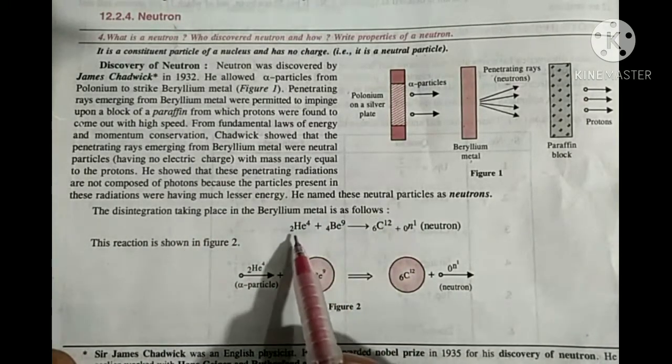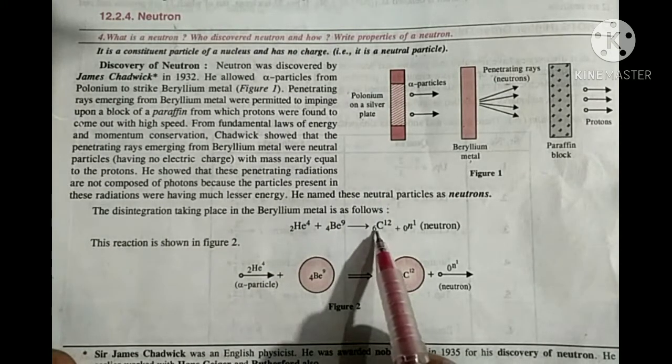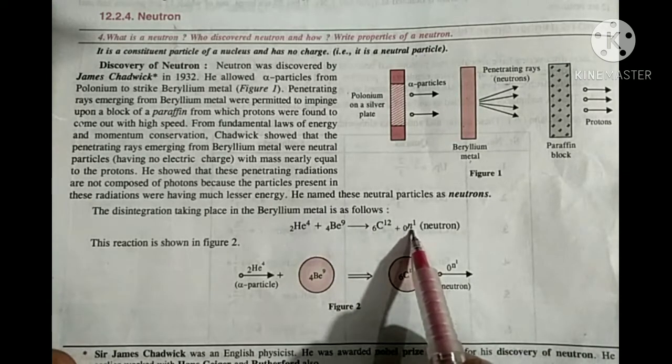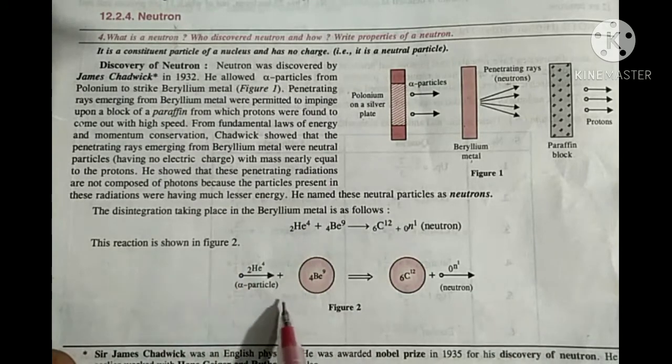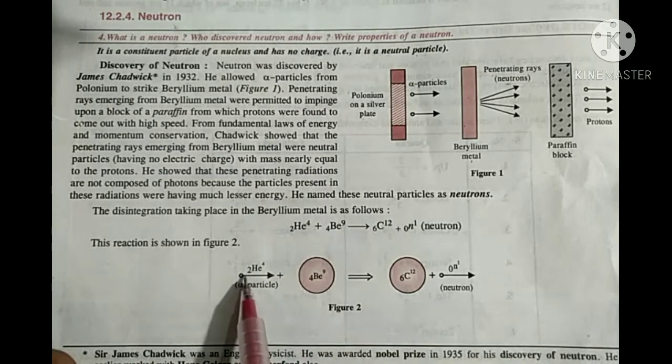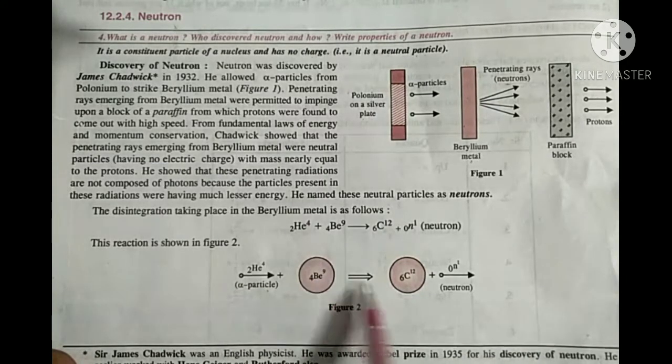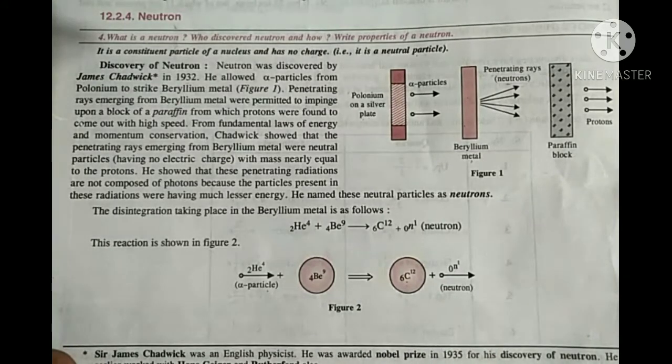Helium plus beryllium gives carbon plus one neutron. Helium, alpha particle, plus beryllium gives carbon and one neutron emitted.